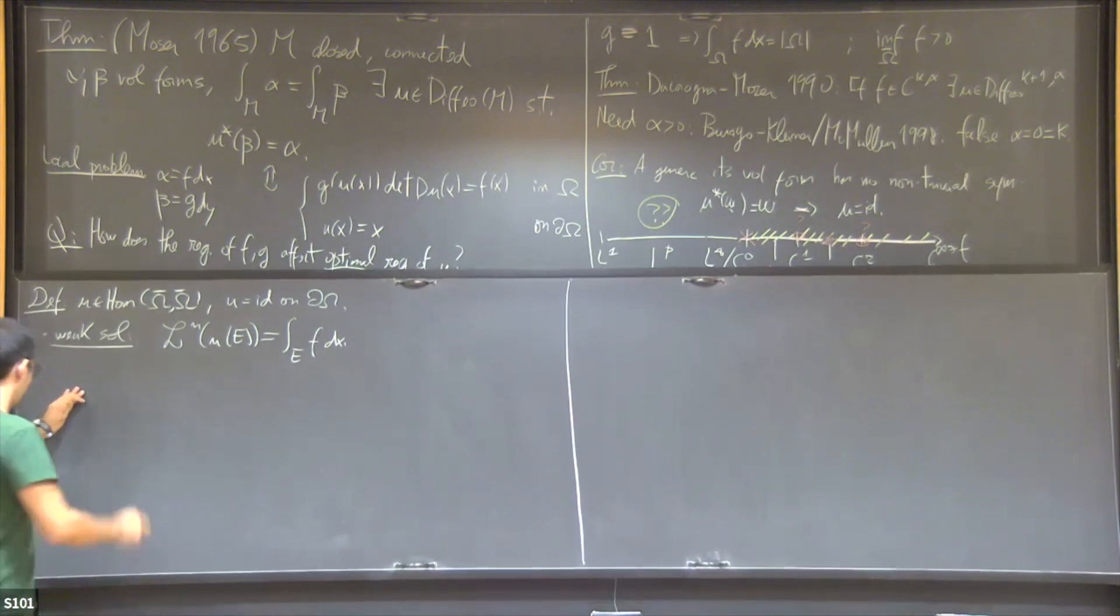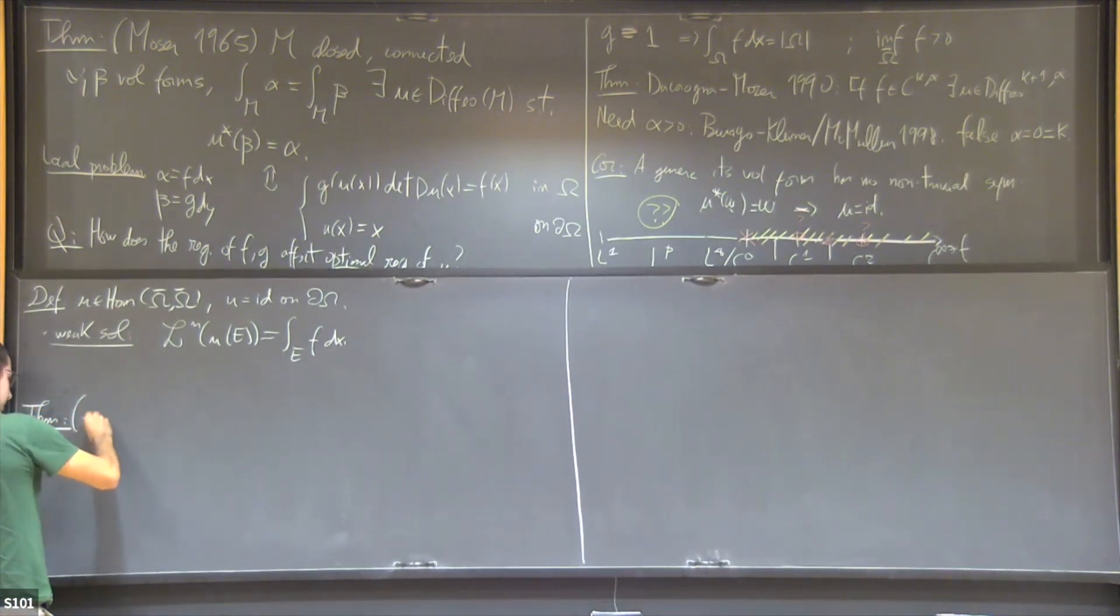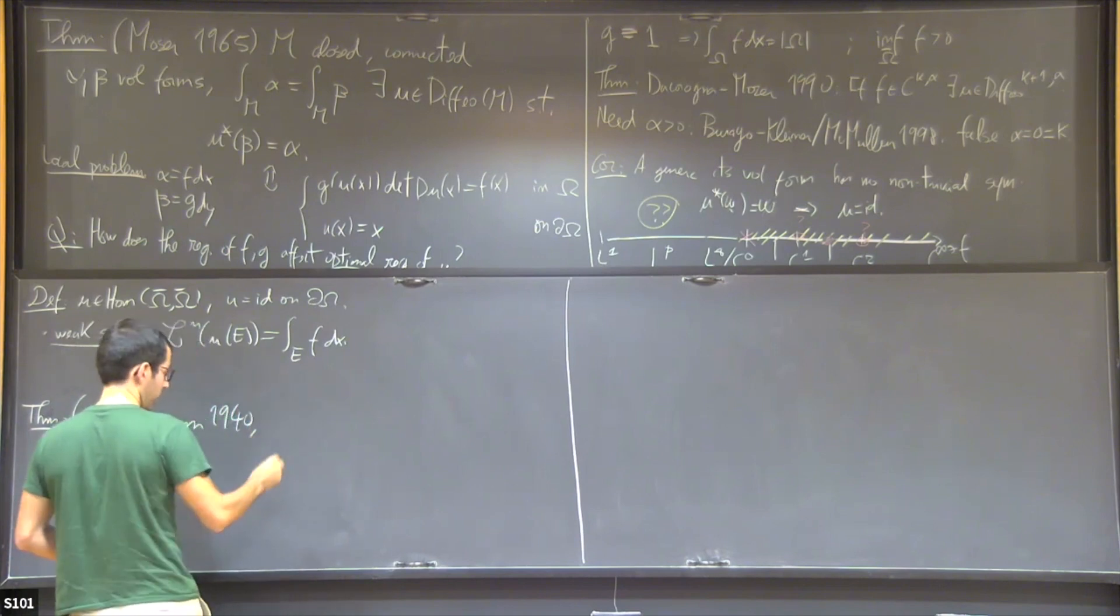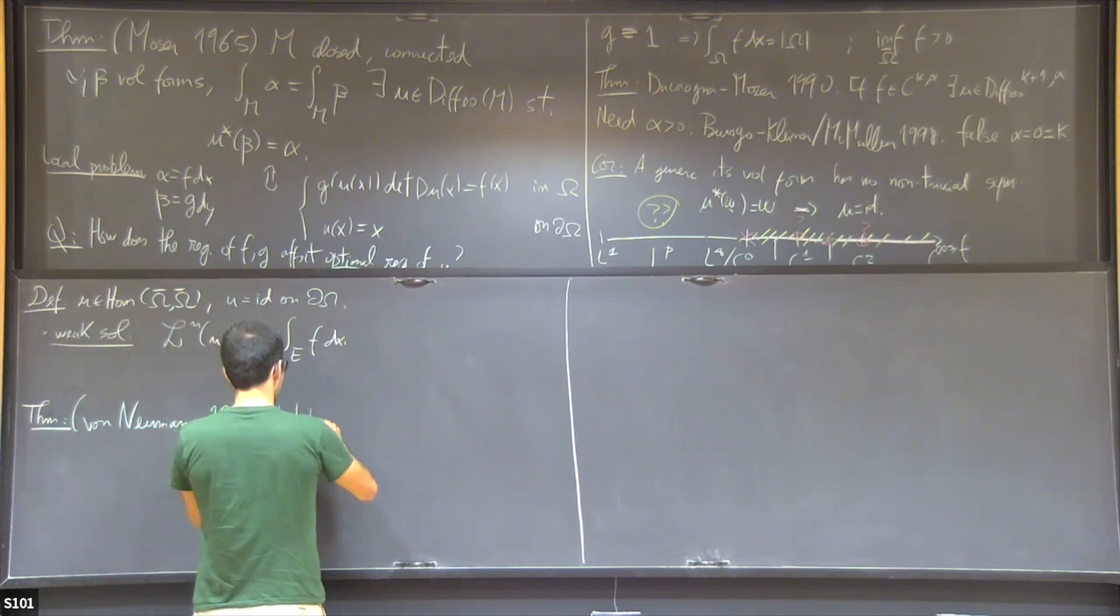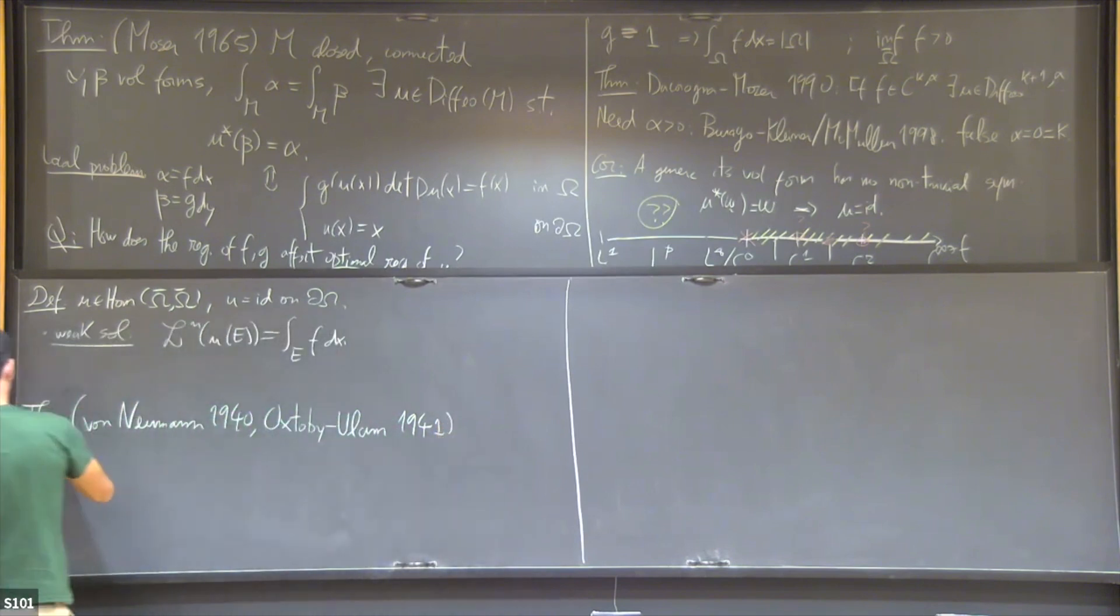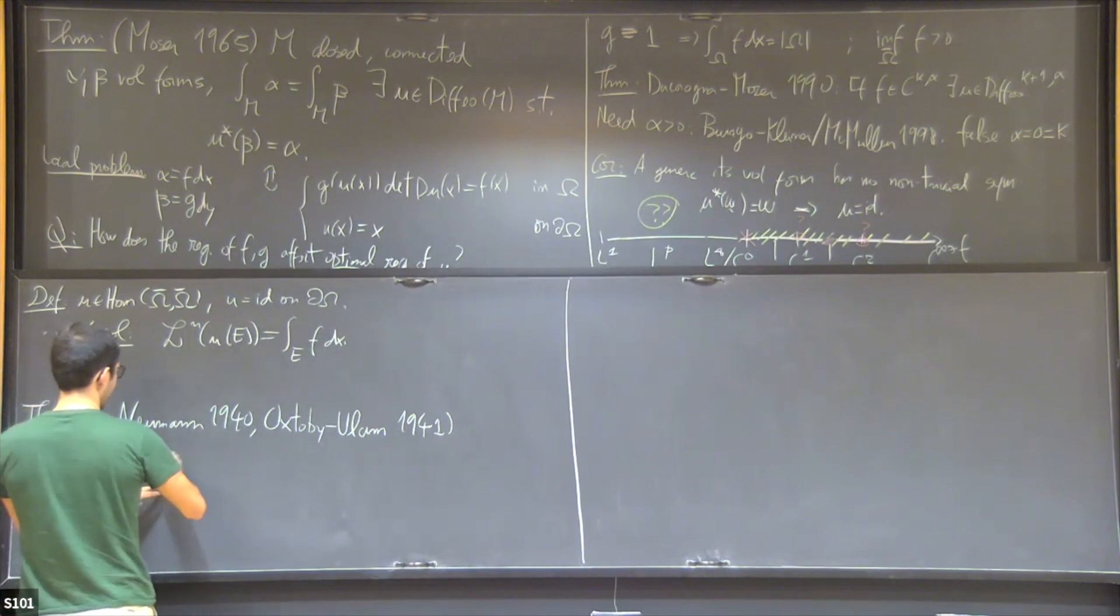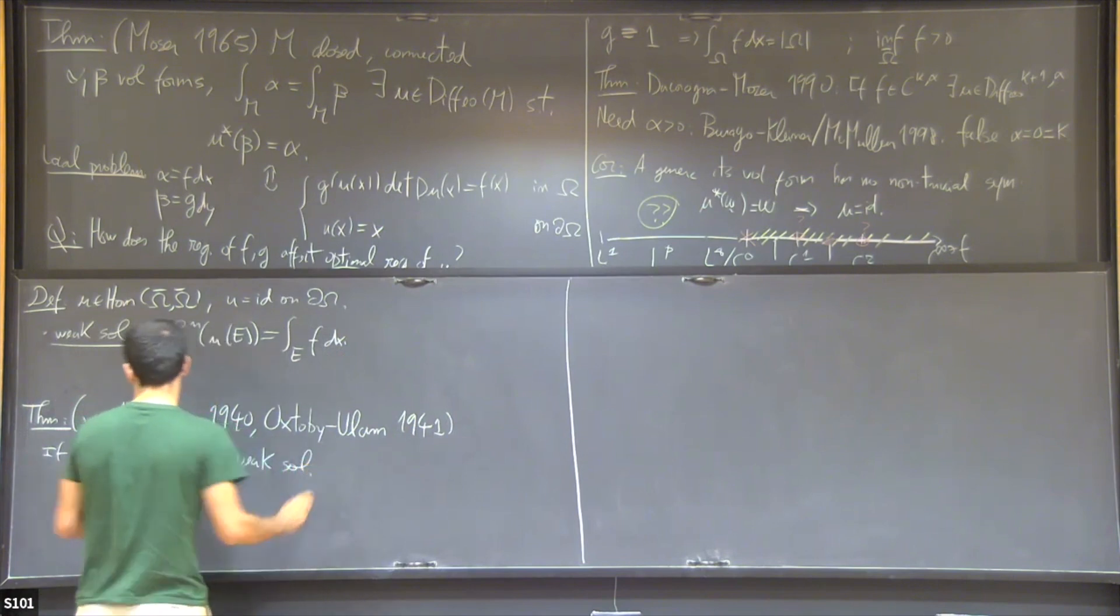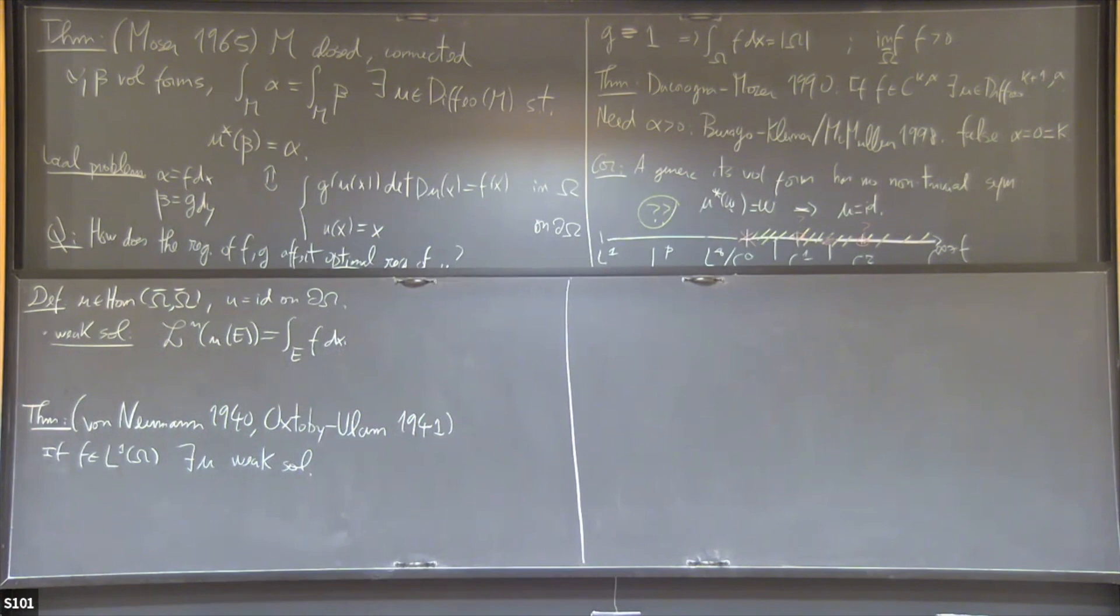The good thing about weak solutions is that they always exist. This is an even older result, which was proved right here at the institute by von Neumann in 1940. He actually never published his work, and then it was proved in mathematics by Oxtoby and Ulam, who were also in Princeton at the time, a year later. They showed that if f is in L^1, then there exists a weak solution.